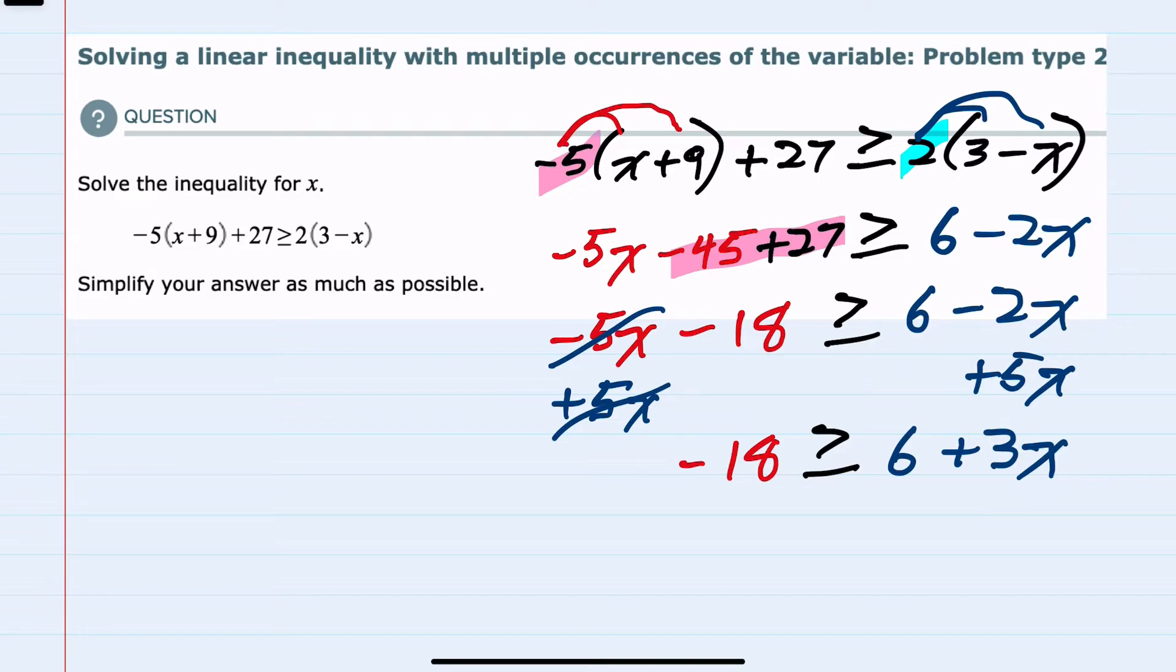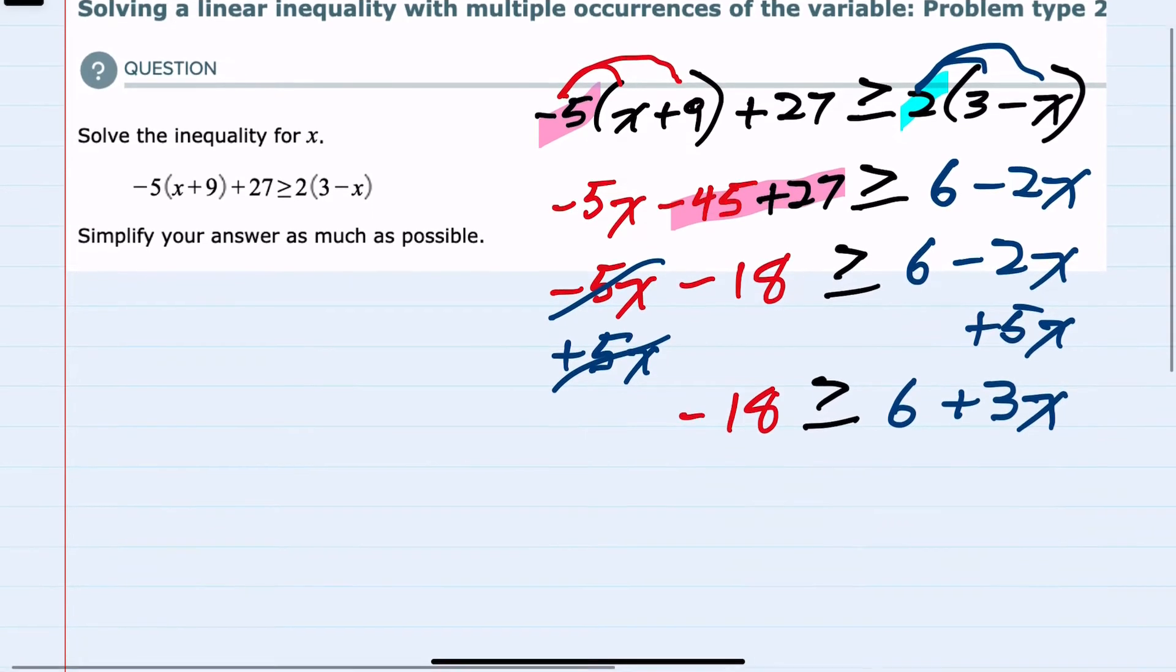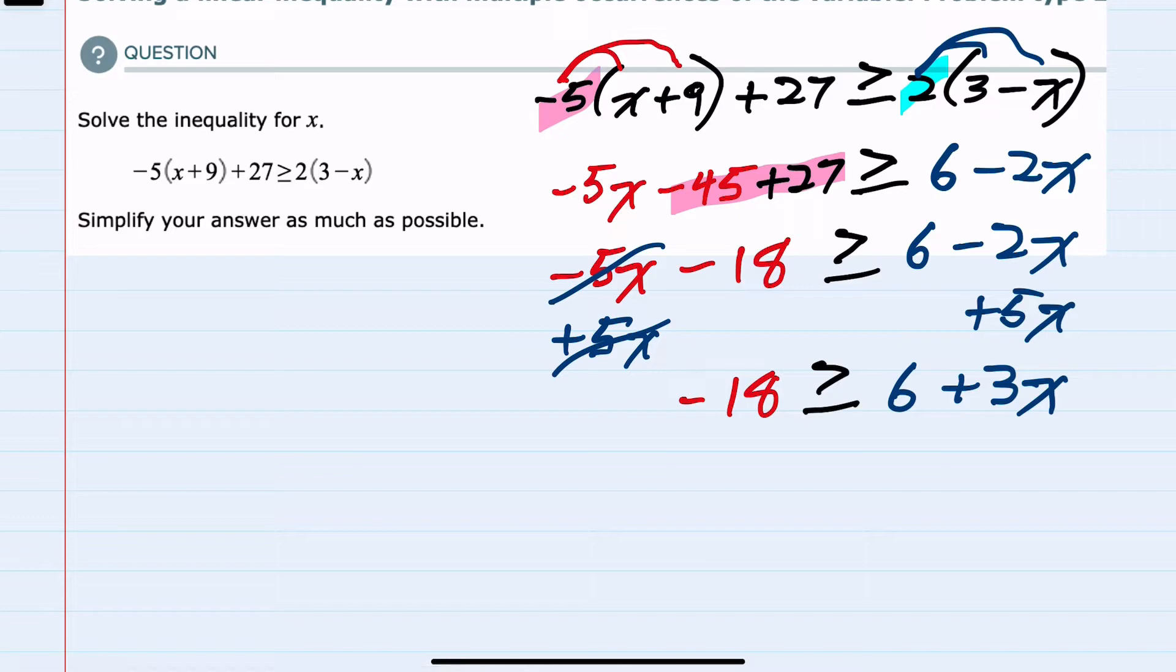Now to continue solving for x, I want to get rid of the 6, which I can do by subtracting 6 on the right. I therefore need to subtract 6 on the left. On the right, this would cancel to give me just 3x. On the left, negative 18 minus 6 is negative 24.